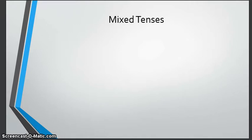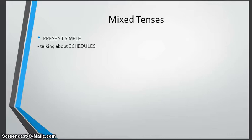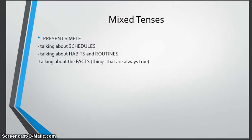For the present simple, we use this to talk about schedules, like 'my bus leaves at 8 a.m.' We use it to talk about habits and routines, like 'I always brush my teeth,' and we use it to talk about facts — things that are always true, like 'the sky is blue' or 'the grass is green.'